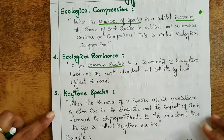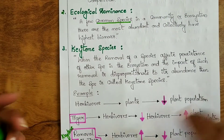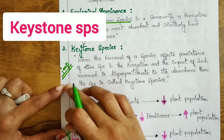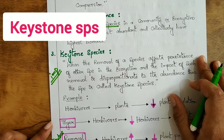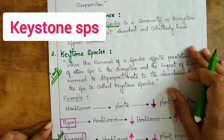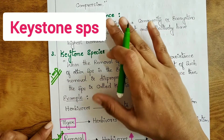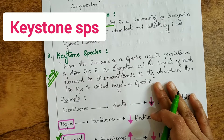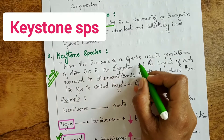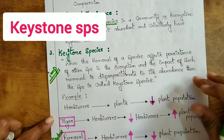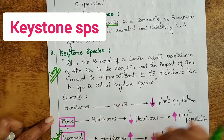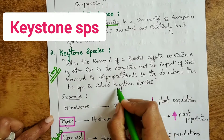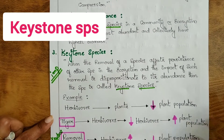The next and most important term is keystone species, which is frequently asked in examinations. Do not confuse it with ecologically dominant species — they are very different. The definition is: when the removal of a species affects the persistence of other species in the ecosystem, and the impact of such removal is disproportionate to its abundance, then that species is called a keystone species.